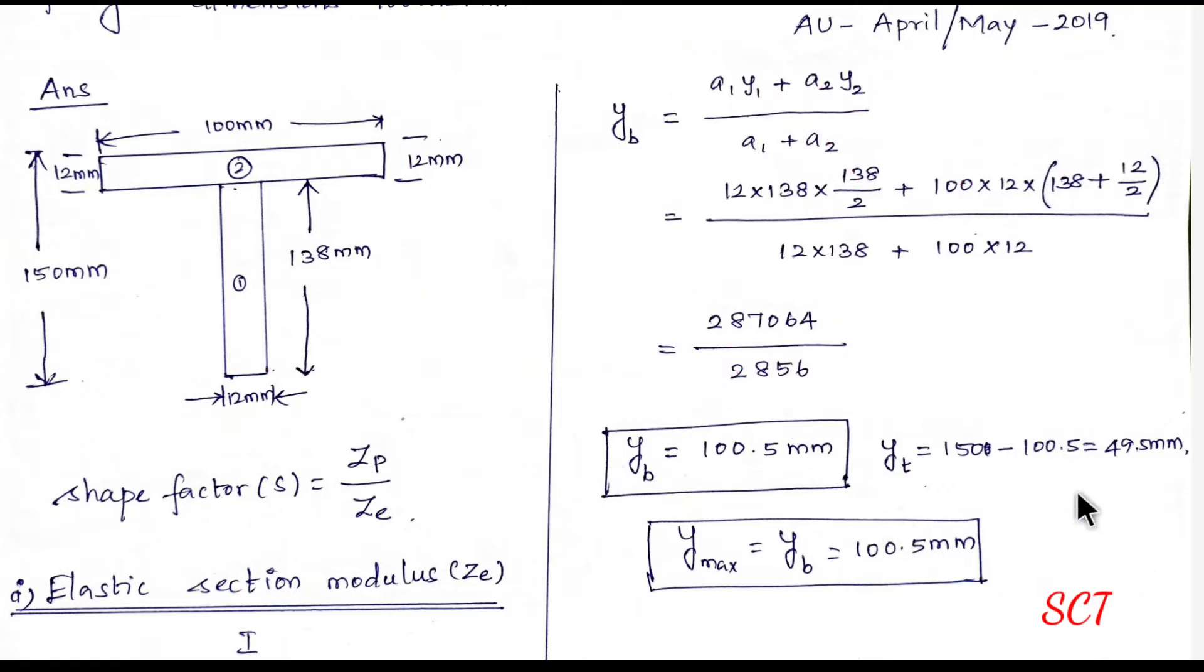Now let's look at YT. YT means from the top. From the bottom, we calculate the total depth is 150. YB means YT. So YT means 49.5 mm.